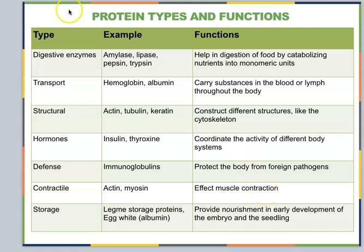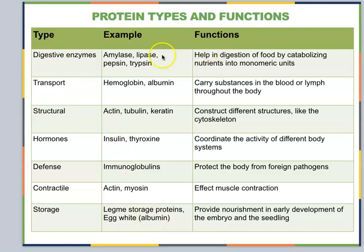I'm not telling you to memorize this table. What you want to make sure you understand are the types of proteins. I wouldn't go through all the different examples just yet because it's more important you understand what they're doing — digestive enzymes do what, transport proteins do what, structural proteins do what. If you don't understand some of the words, it's a great opportunity to start looking them up.